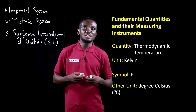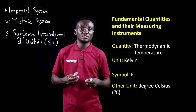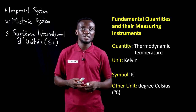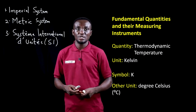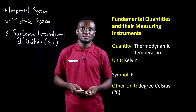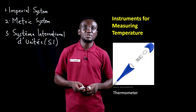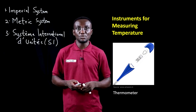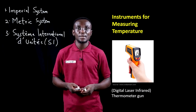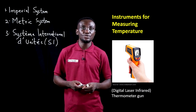When it comes to measuring thermodynamic temperature, the unit is Kelvin, with the symbol capital K. The other units are degrees Celsius, and in some areas we use degrees Fahrenheit. The instruments for measuring temperature range from the thermometer, the clinical or medical thermometer, and the temperature gun, as we know it — especially relevant in recent times checking temperatures for COVID.